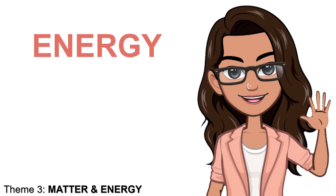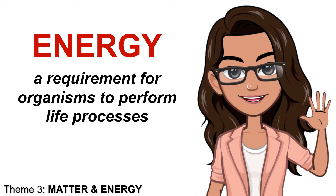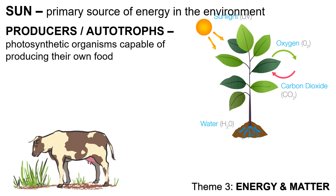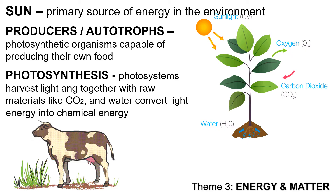A characteristic common to all forms of life is the need for energy — a requirement for organisms to perform life processes. Growing, reproducing, moving, and other intracellular processes require that organisms spend energy. The sun is the primary source of energy in the environment. All organisms rely on the sun's energy input to survive. It provides energy in the form of light, received and utilized by autotrophs or producers, which are photosynthetic organisms able to harvest sunlight to create their own food. Photosystems harvest light, and together with raw materials like carbon dioxide and water, convert light energy into chemical energy in a process called photosynthesis.